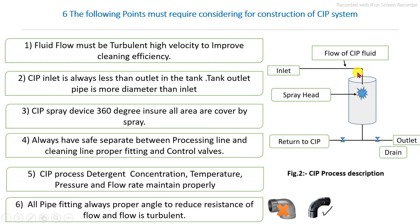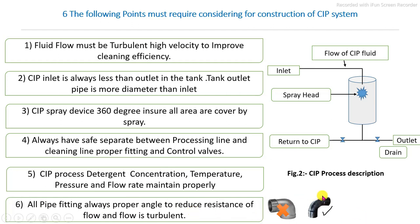There must always be a safe separation between the processing line and the cleaning line, properly fitted with controlling devices. Whatever the processing line system and the detergent circulation lines, these should be separate and properly fitted with controlling devices. In the CIP process, detergent concentration, temperature, pressure, and flow rate are automatically controlled by a microprocessor control system. All pipe fittings must always be properly angled to reduce flow resistance, and internal flow must be turbulent for proper cleaning of all piping systems.